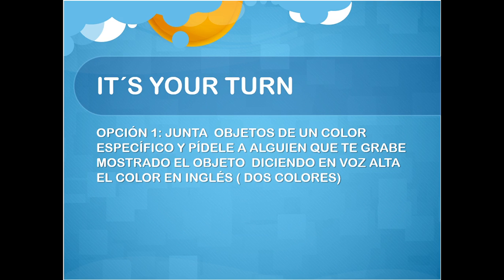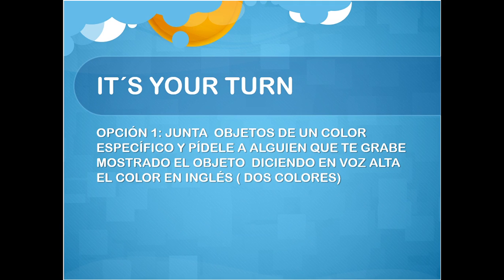It's your turn. ¿Qué tienen que hacer? Tenían dos opciones. Opción 1: junta objetos de un color específico y pídele a alguien que te grabe mostrando el objeto, diciendo en voz alta el color en inglés. Por ejemplo, puedes buscar algo rojo, como un lápiz, lo que sea. Si encuentras una chaqueta de color negro, tú tienes que decir el color en inglés: black.